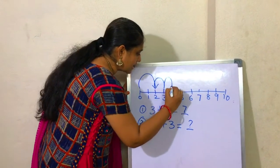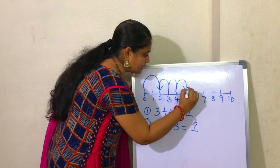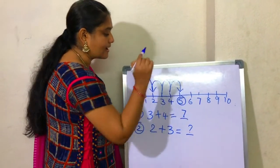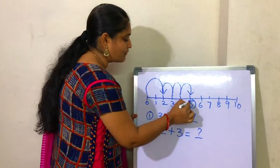Now, jump 3 numbers to the right. Now tell me, what number do we get? Yes, right. 5.